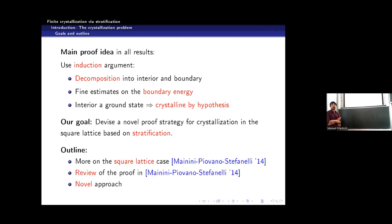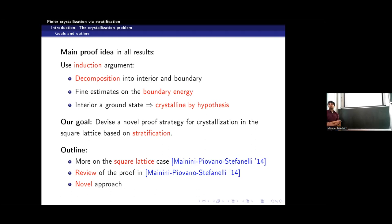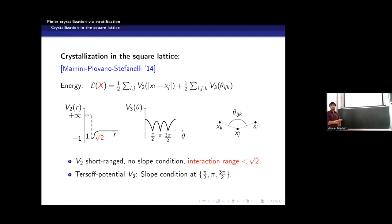My talk will be exclusively about the square lattice, where we have this method right now. First I will discuss the square lattice model and what minimum energy to expect. Then I will review the existing proof by Stefanelli and collaborators, and finally present our novel perspective. Configurations will always be indicated by capital X — a configuration of n points — and it is important that we have short-range potentials.